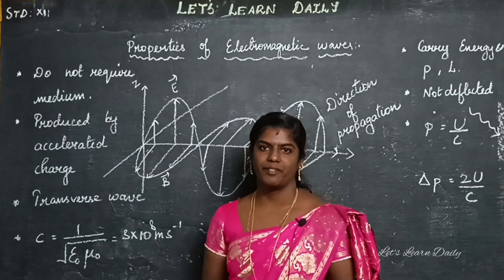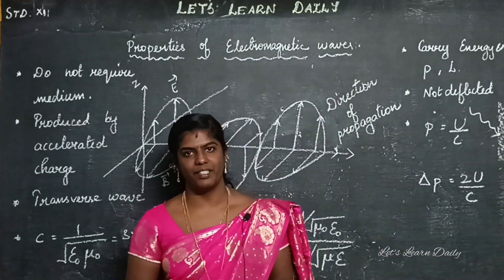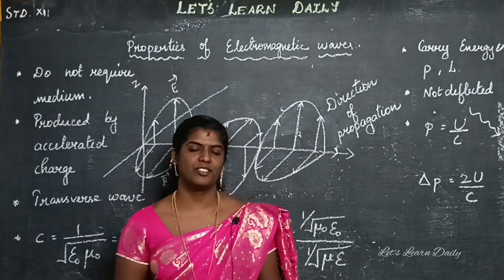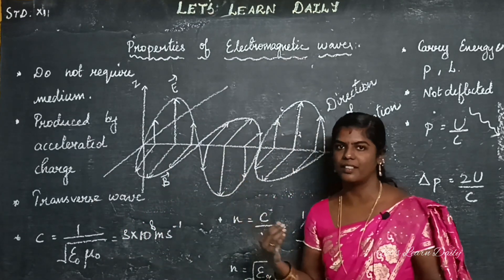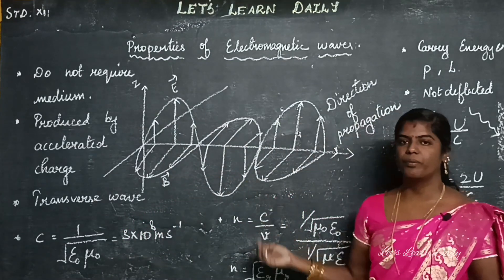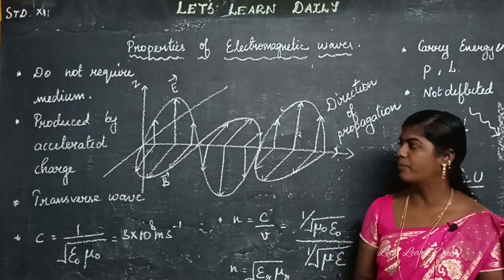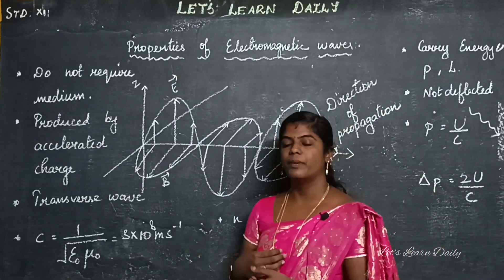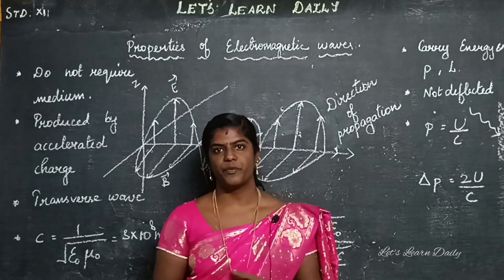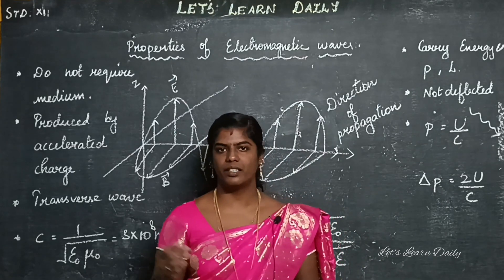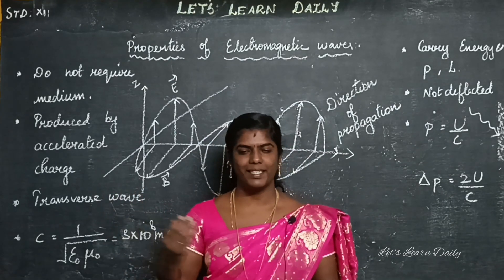Electric and magnetic field in combination form electromagnetic waves. This is actual radiation. They do not require any medium to travel — electromagnetic waves from the sun travel through space.